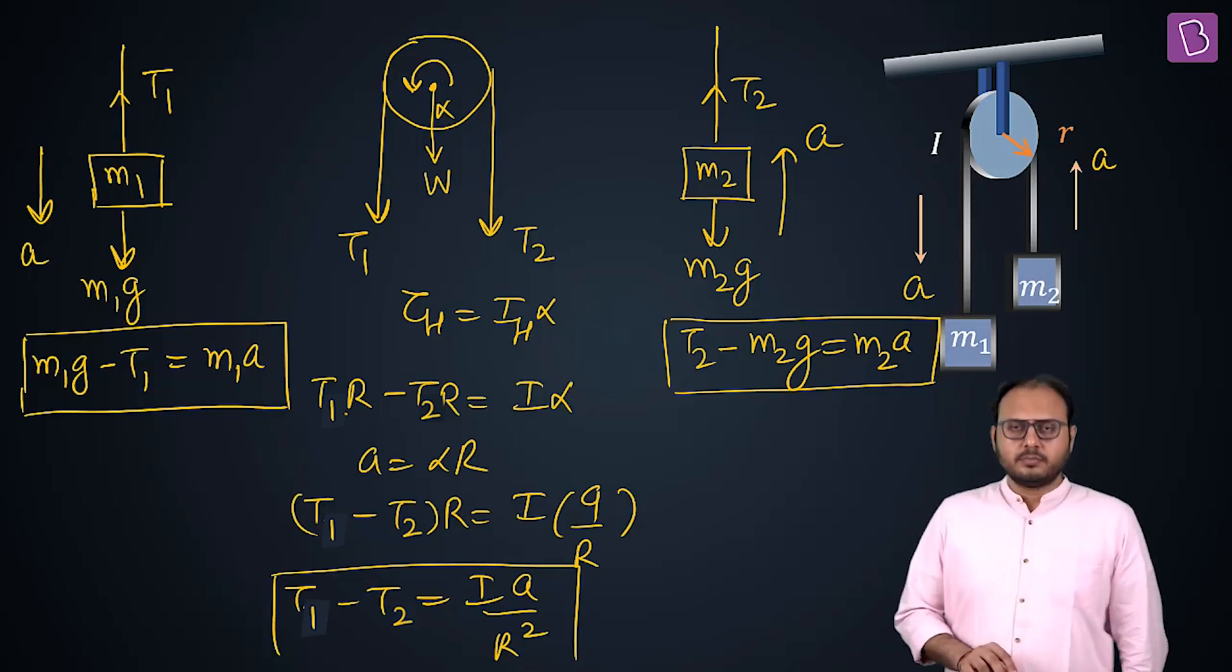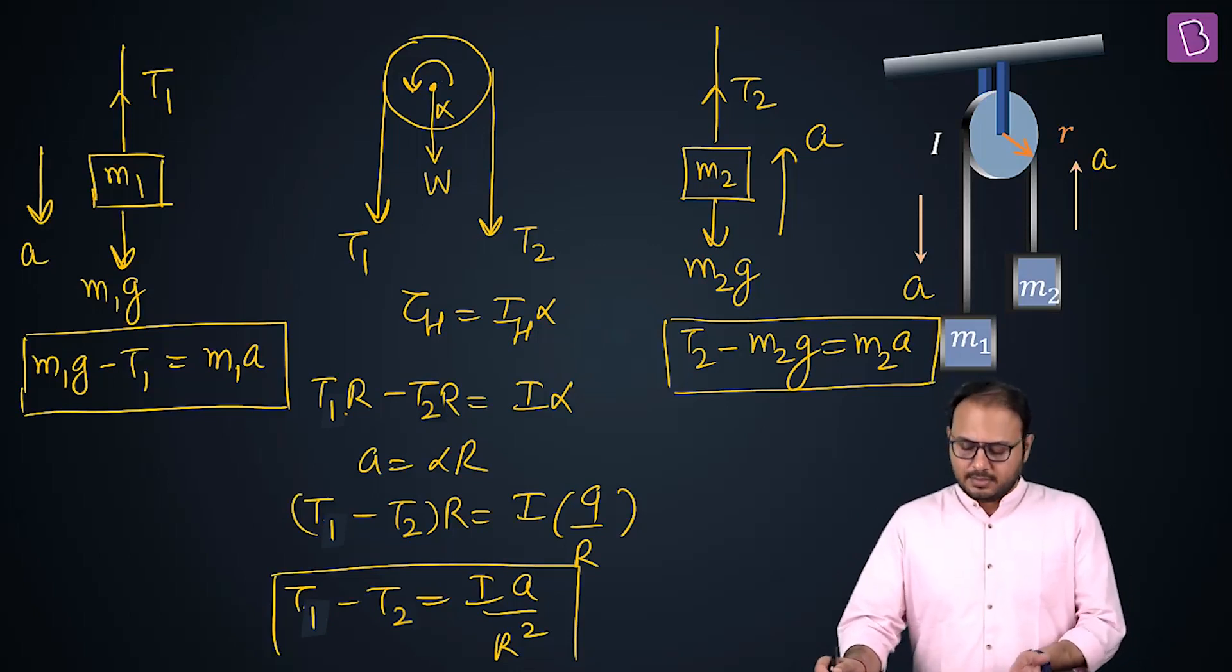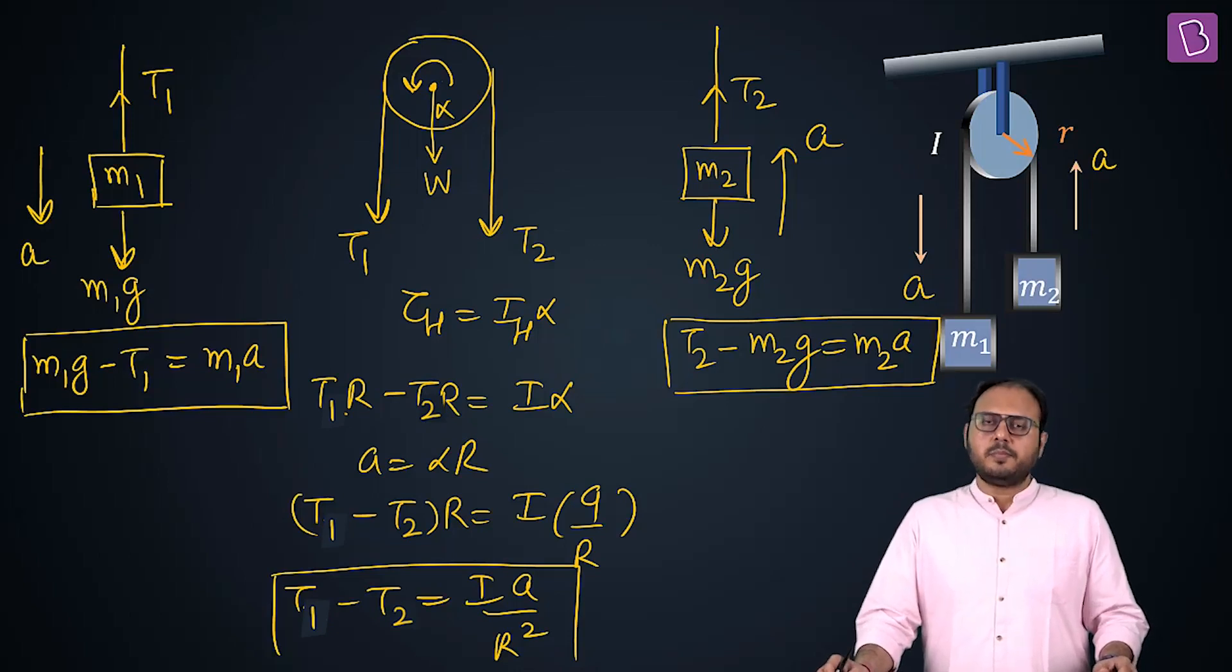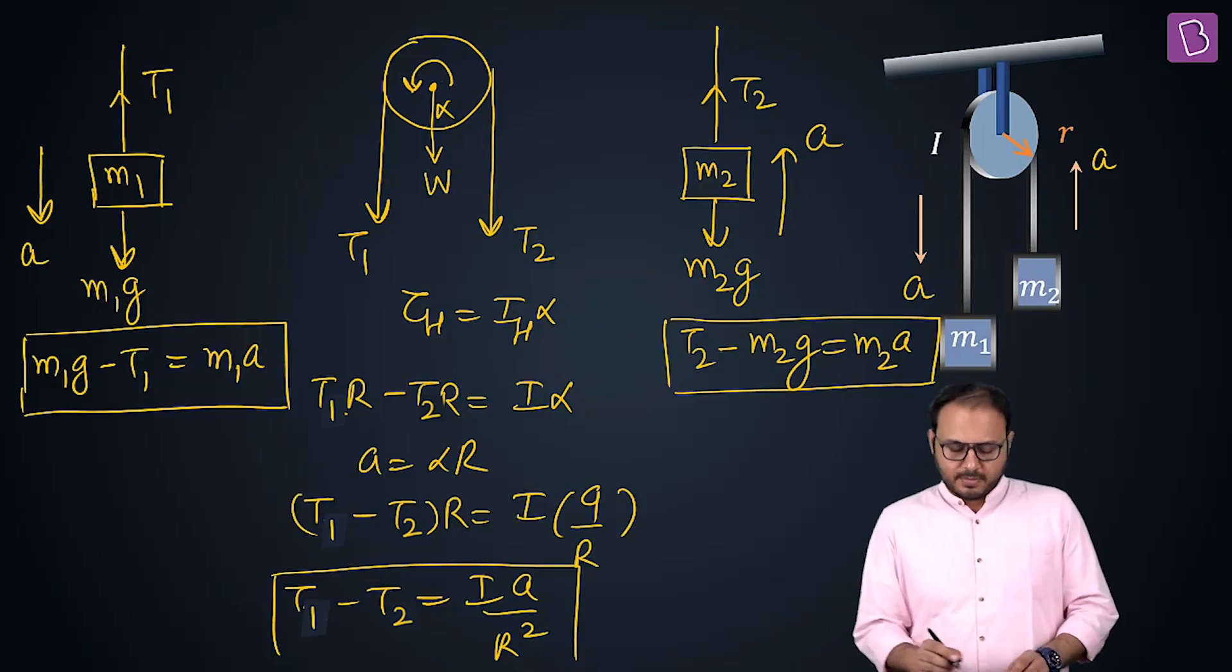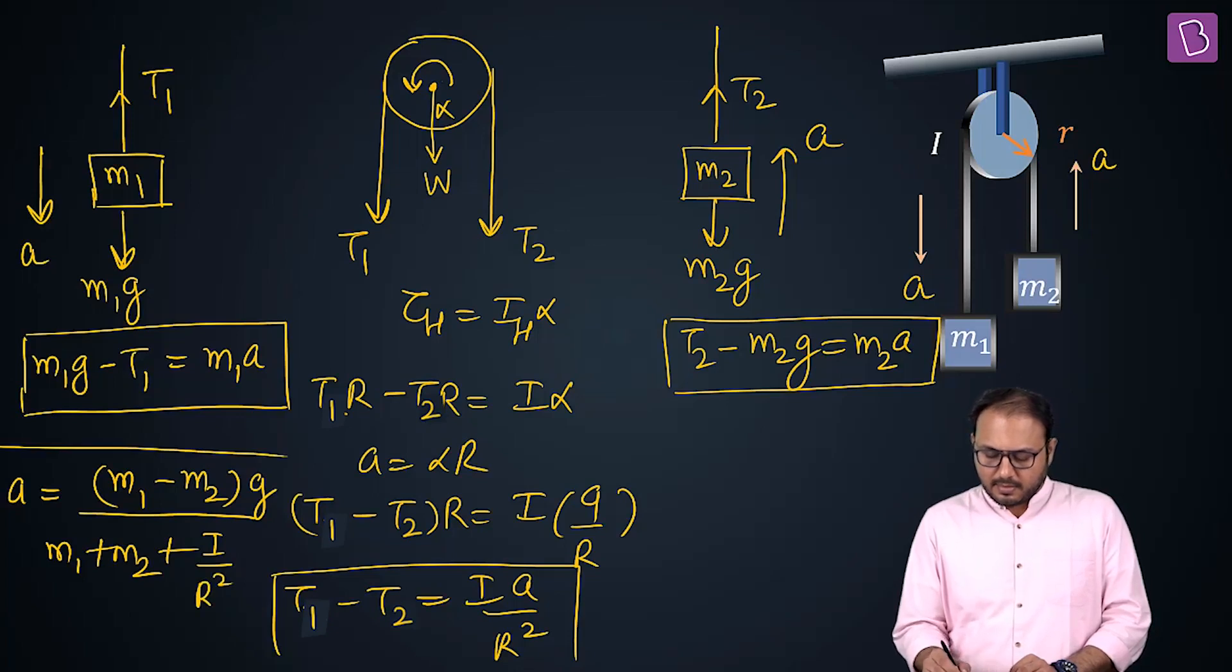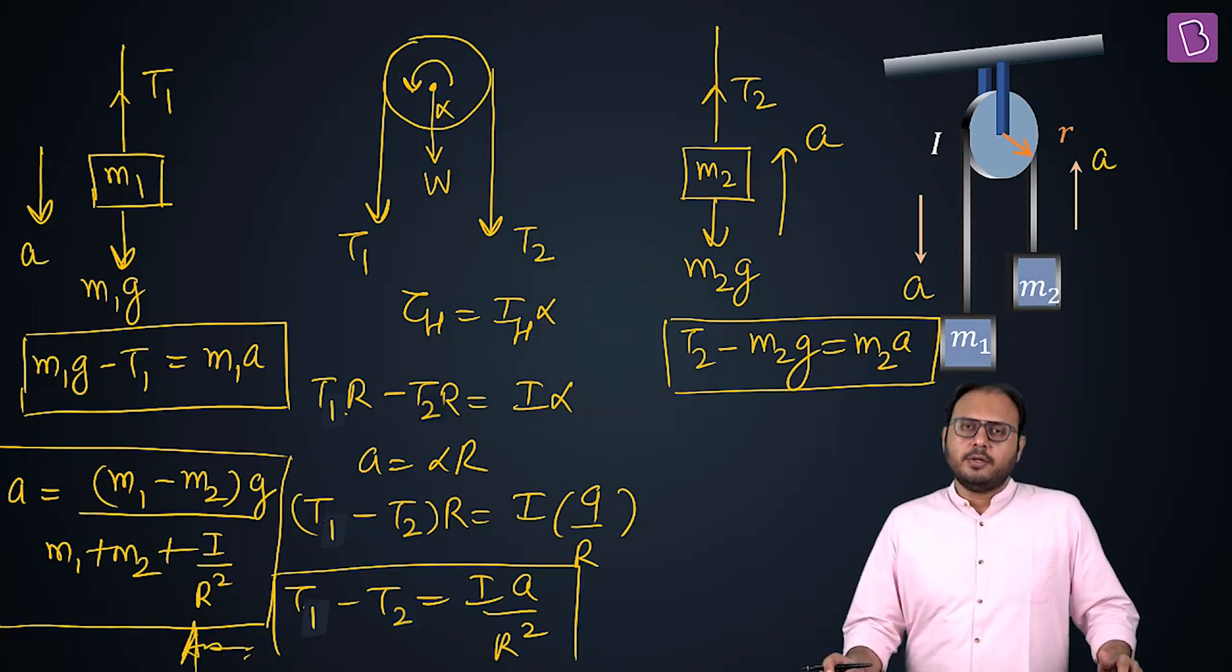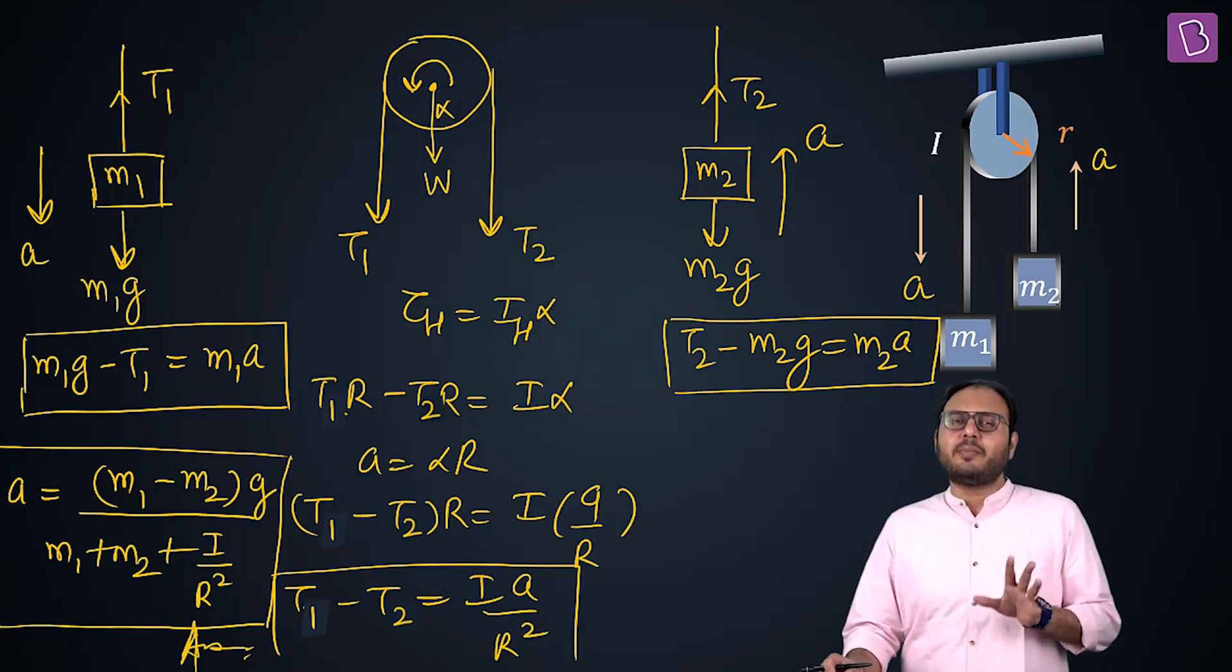So how will you solve it now? Add all three. I'll wait for one full minute, don't worry. If you do that, your answer is going to be... add all of them. If you add all of them, take your time. Do you realize in laws of motion the term in the denominator I by R square was not there, except everything else was there.